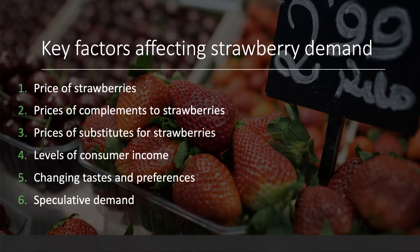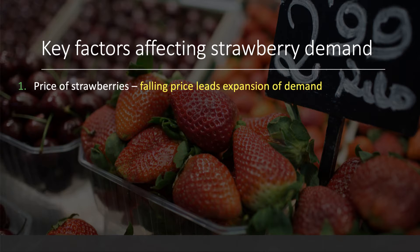We'll also think about the price of complements to strawberries, the price of substitutes for strawberries, the level of consumer income, the effects of changing tastes and preferences, and possibly speculative demand. When strawberries become cheaper — for example if supermarkets discount the price — a lower price leads to an expansion of demand, because consumers get more satisfaction per pound spent. So a price going down leads to an expansion of demand; if the price goes up, that leads to a contraction of demand.